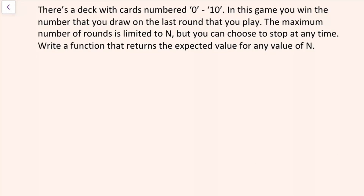First I'm going to think about the winnings from just one draw from the deck as being discrete uniform from 0 to 10. So the expected winnings is going to be the start of the uniform plus the end of the uniform divided by 2. That's 0 plus 10 divided by 2, which is 10 over 2, which is 5.